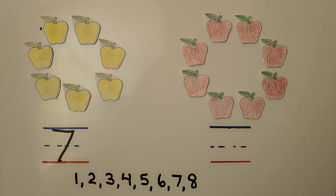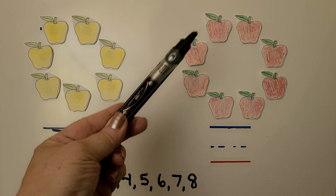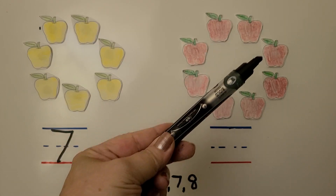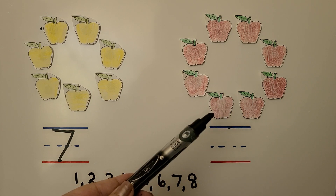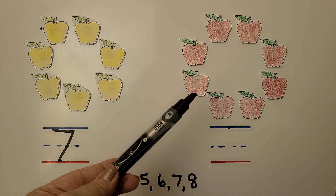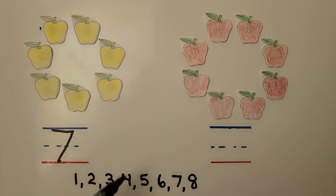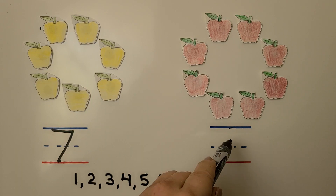We can count the red apples. There are one, two, three, four, five, six, seven, eight. We can write the number eight.